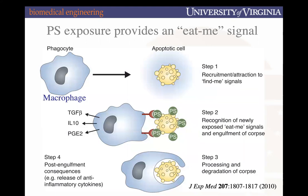In our immune system there are specific cells called phagocytes that go through phagocytosis — 'phago' means eating, 'cyte' means cell, 'osis' is the process — the process of eating cells. Phagocytes are professional cell-eating cells. When they see phosphatidylserine on the outer leaflet, that is a sign they can engulf and clear that dying cell. This is the typical way dying cells are cleared out.